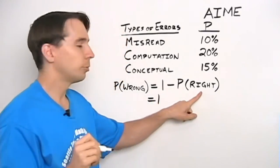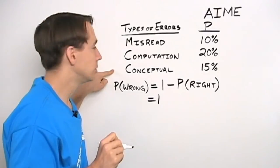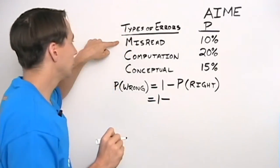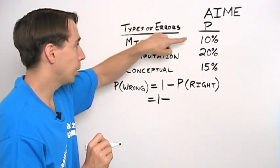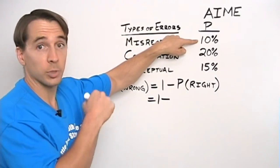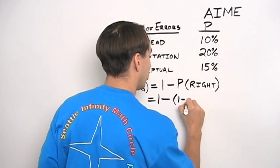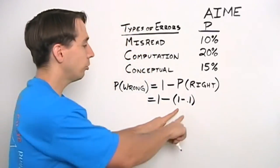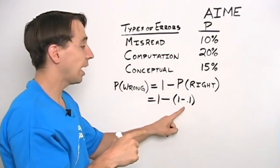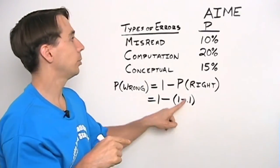So in order for me to be correct, I have to not make any of these errors. So I have to avoid all three of these mistakes. So I have to read the problem correctly. Now the probability is 10 percent that I'm going to read it wrong, so the probability that I read it right is 100 percent minus that is 90 percent, or I can write that as 1 minus 0.1. And once again, all we're doing here is we're noticing that, well, either I misread it or I read it correctly. These two probabilities have to add to 1, so the probability that I read correctly is 1 minus the probability that I misread it.